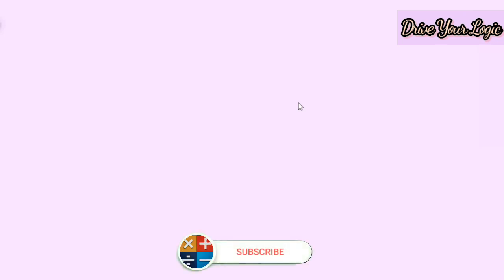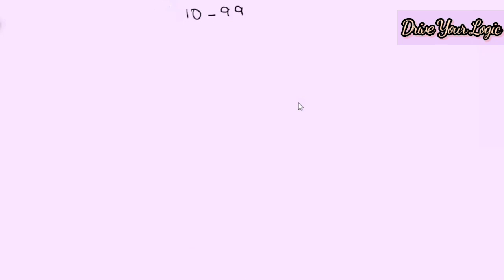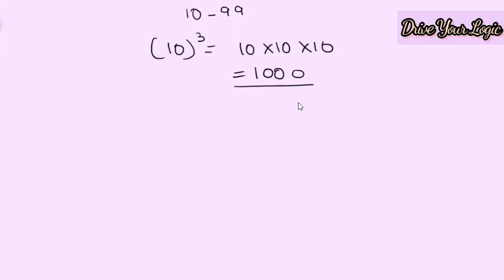Hello everyone, welcome to Drive Your Logic. Today I am back with cubing of a number. We will learn how to cube a two-digit number, from 10 to 99. Cube means you multiply a number three times — for example, 10 cube is 10 into 10 into 10, which is 1000. There are four types of sums I am going to show you today.